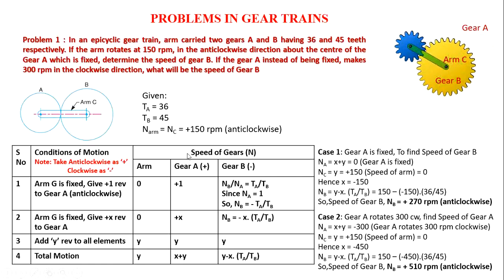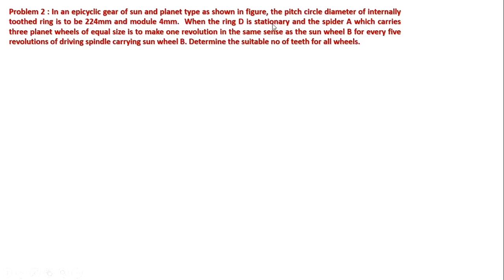This is about the first problem. We will go with the second problem. In an epicyclic gear of sun and planet type, the pitch circle diameter of the internal ring D is to be 224 mm and the module is 4 mm. When ring D is stationary and the spider A, which carries 3 planet wheels of equal size, makes 1 revolution in the same sense as sun wheel B for every 5 revolutions of sun wheel B. Determine the suitable number of teeth for all wheels.